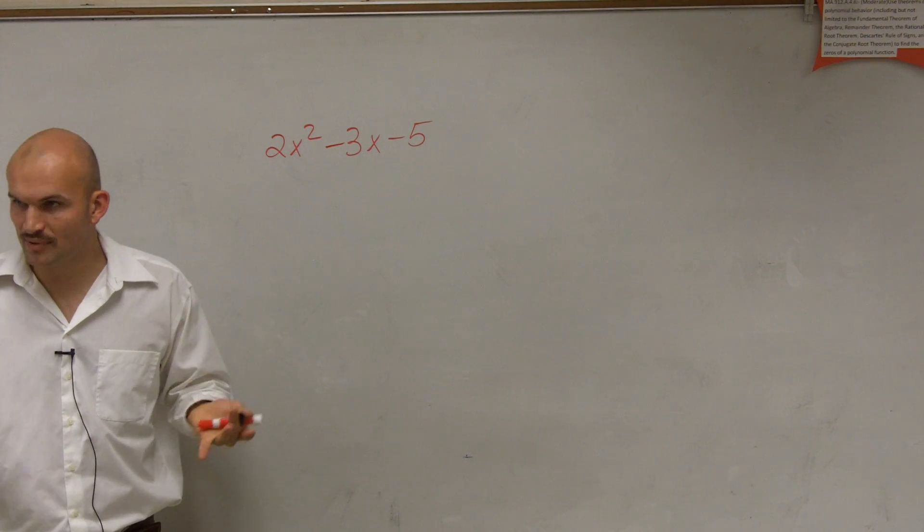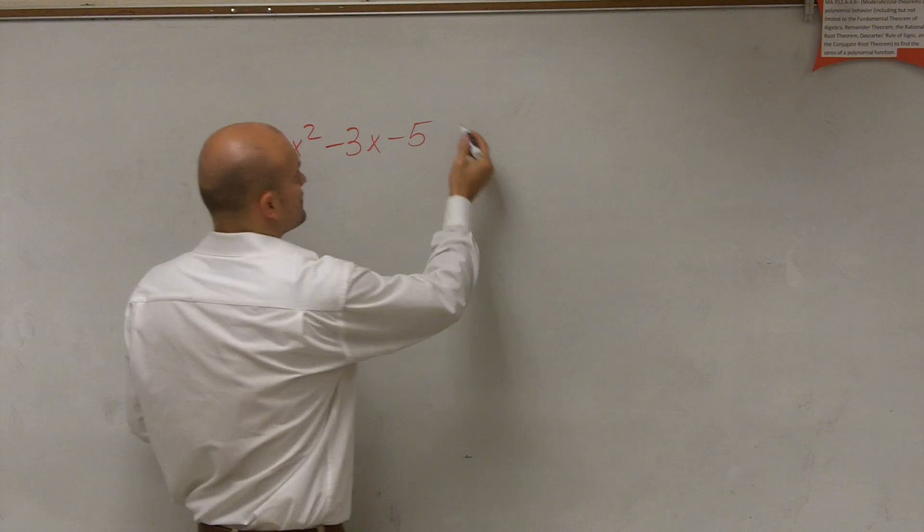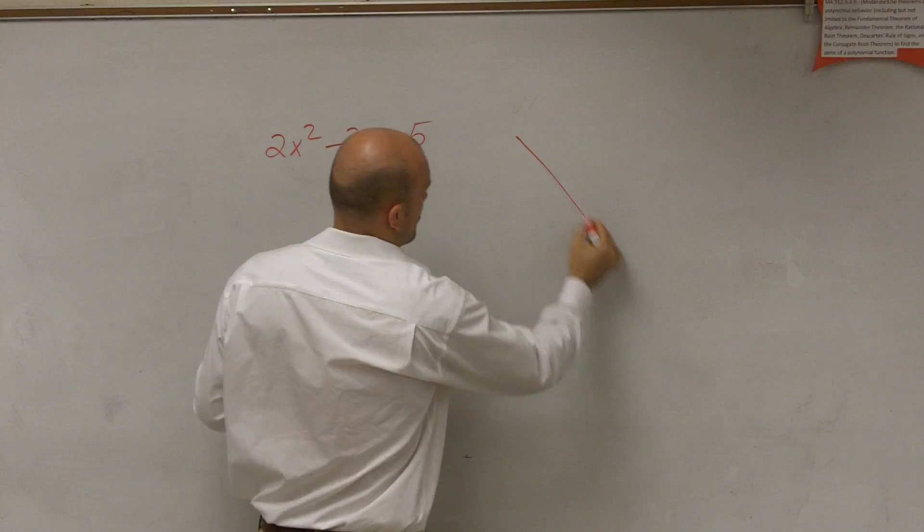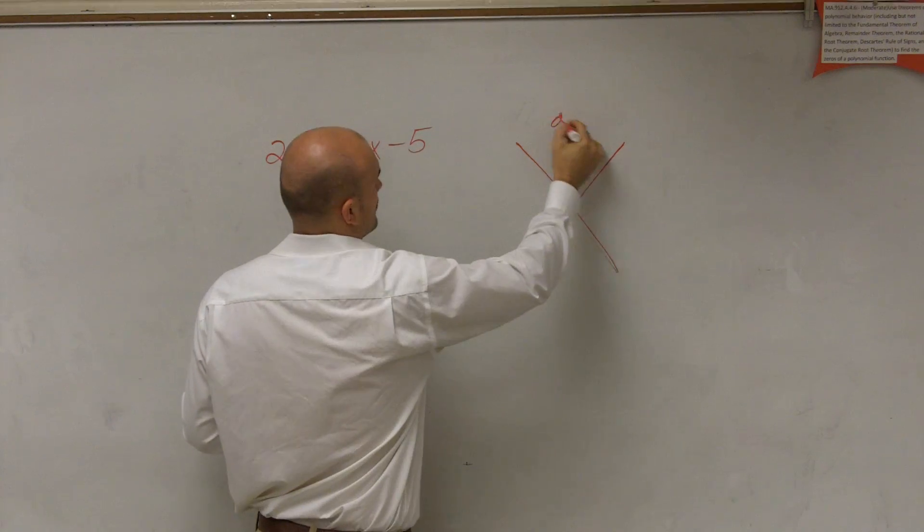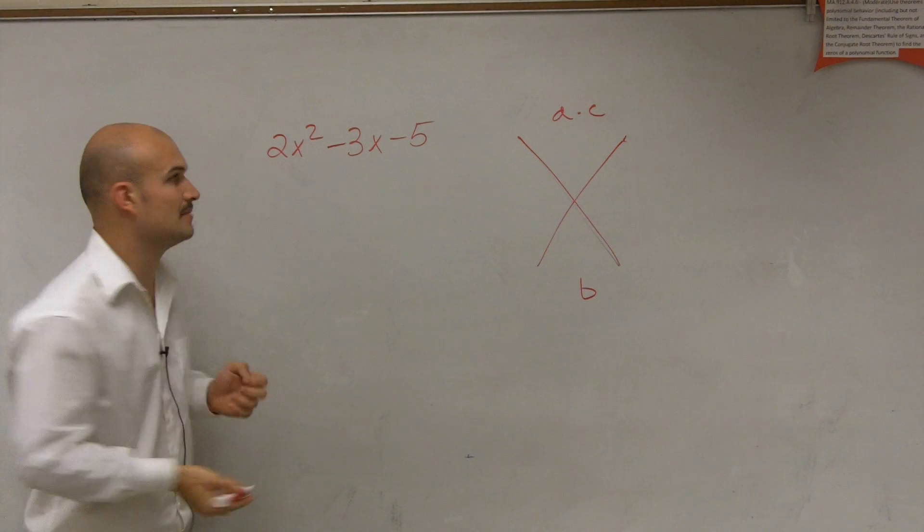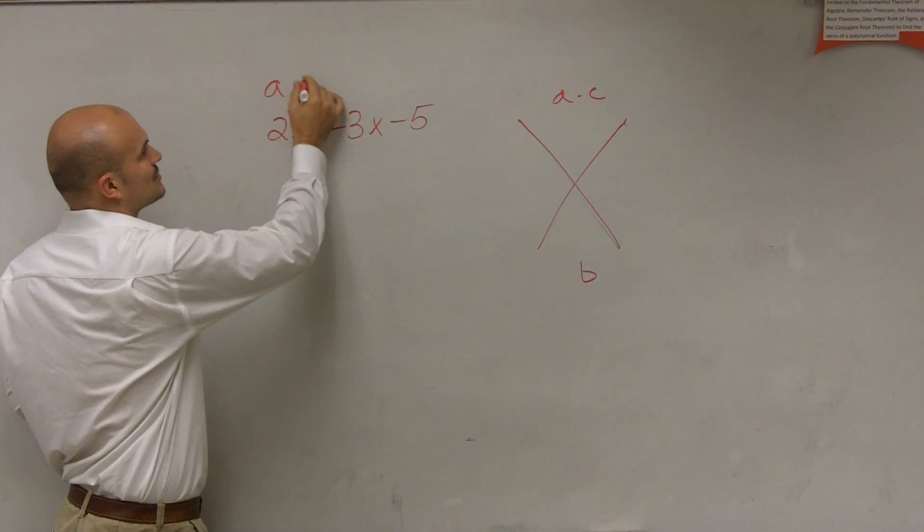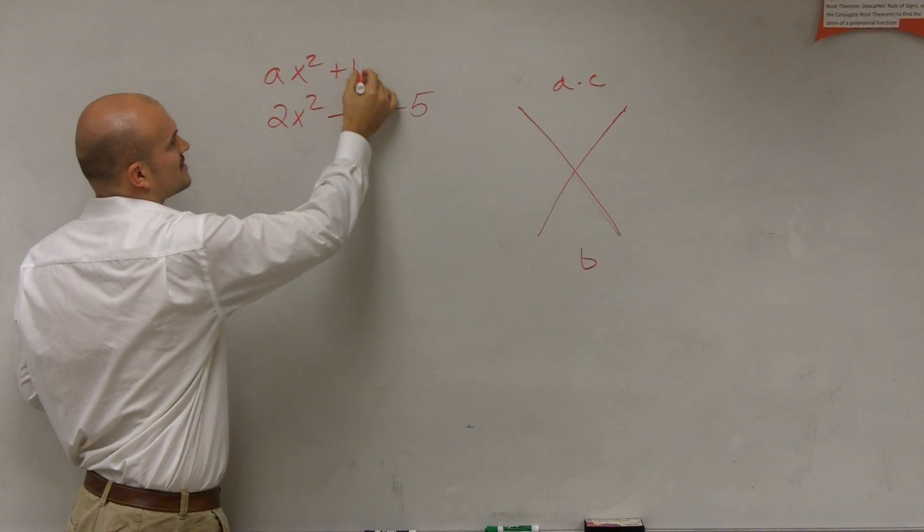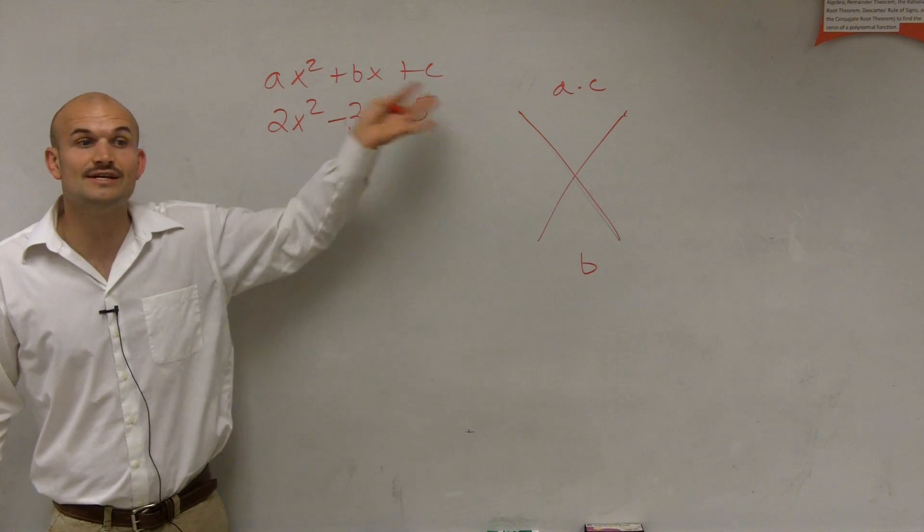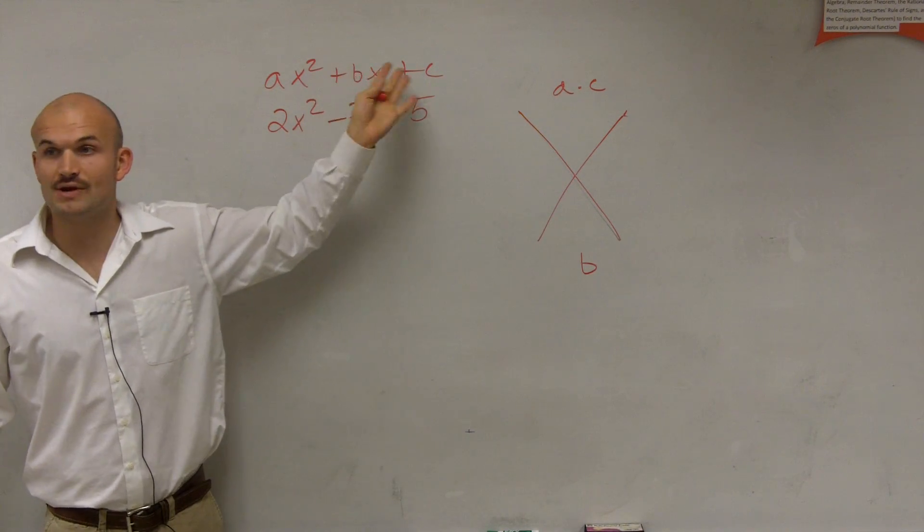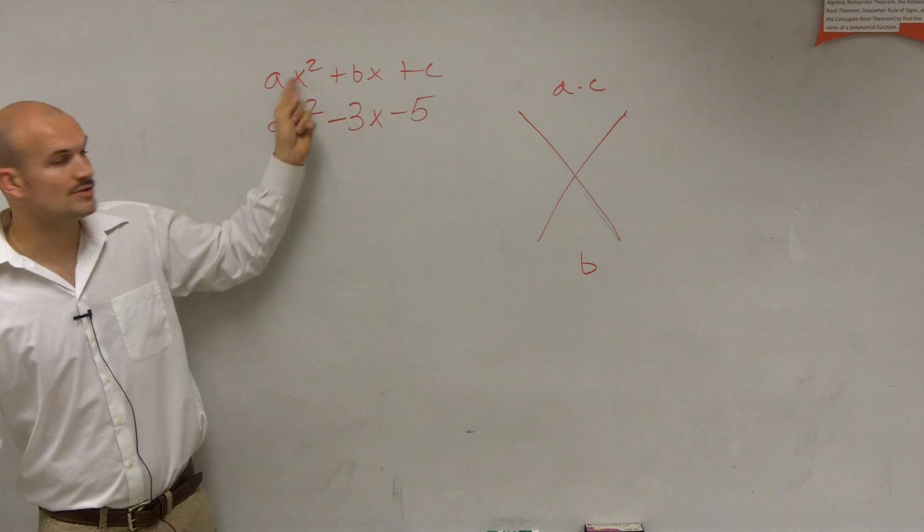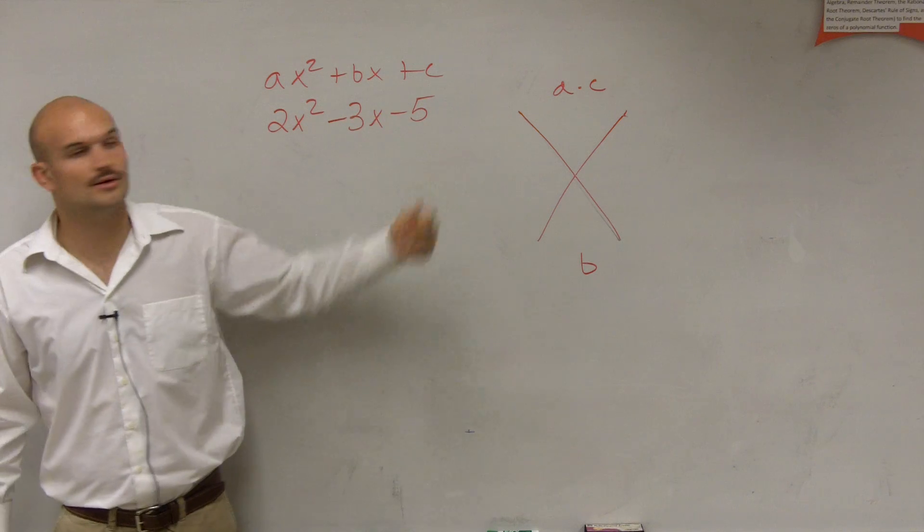And there's a little way to help us determine the factors. And the first thing, the way that I like to do it, is use a marker that works. And I like to use the little X with the a times c and b on the bottom. Now remember, this is a quadratic. All quadratics can be rewritten in this form. Even if you don't have an a and a b, you can put a zero in for them. But all quadratics can be written in this form when you have an x squared. The only thing is a cannot be zero.